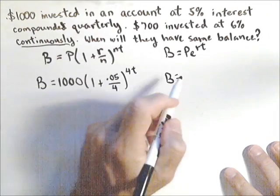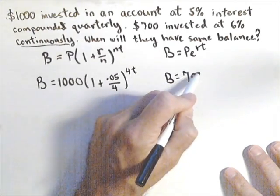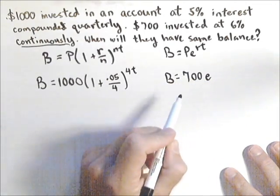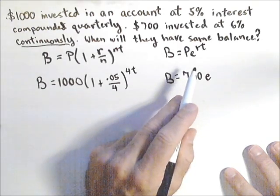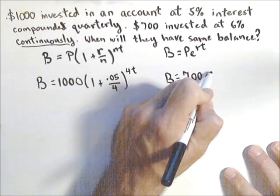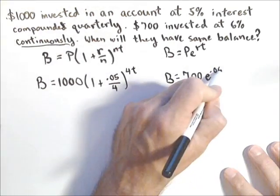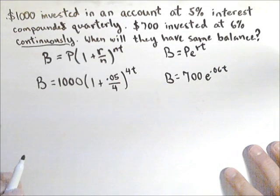So for our second account, our initial amount is $700 times E, that will always be in the compounded continuously, raised to the rate .06t. So we don't need to worry about the number of compounding periods.